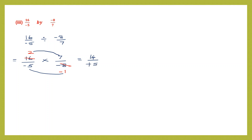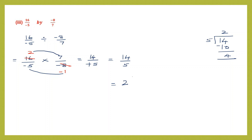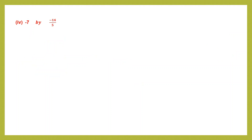Multiply numerators: 2 into 7 is 14. Multiply denominators: minus 5 into minus 1 — minus times minus is plus — giving 5. So we have 14 by 5, an improper fraction. Converting: 14 divided by 5 gives 2 remainder 4. Final answer is 2 and 4 by 5.